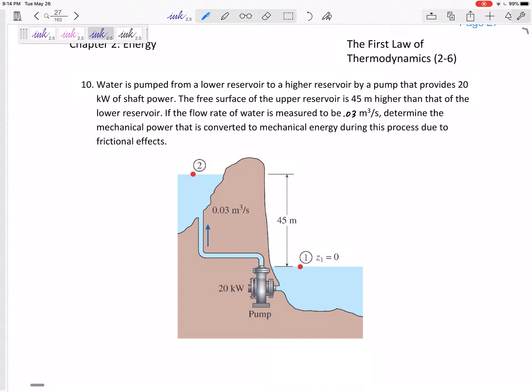If the flow rate of water is measured to be 0.03 meters cubed per second, determine the mechanical power that's converted to mechanical energy during this process due to frictional effects.